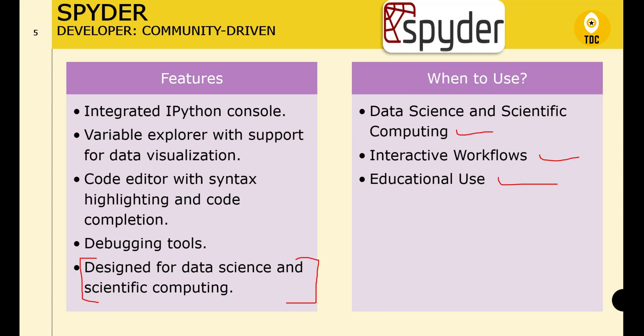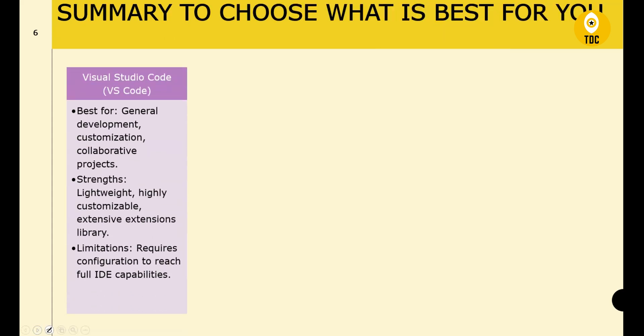Now let's summarize and compare all four IDEs. Visual Studio Code is best for general development, customization, and collaboration. Its strengths are that it is lightweight and highly customizable with an extensive extension library. Its limitation is that it requires some configuration to reach full IDE capability, which may be a challenge for beginners.